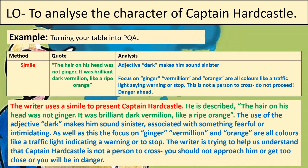Now you're going to turn your table into a PQA. The first row has been done for you, and there's also an example in your workbook of what your PQA should look like — so you've got three more PQAs to write. The example reads: 'The writer uses a simile to present Captain Hardcastle. He is described as: the hair on his head was not ginger, it was brilliant dark vermilion like a ripe orange. The use of the adjective dark makes him sound sinister, associated with something fearful or intimidating. The focus on ginger, vermilion, and orange are all colours like a traffic light indicating a warning or to stop. The writer is trying to help us understand that Captain Hardcastle is not a person to cross.' The P is in red, the Q is in green, and the analysis A is in blue. Follow that structure for your other three techniques.